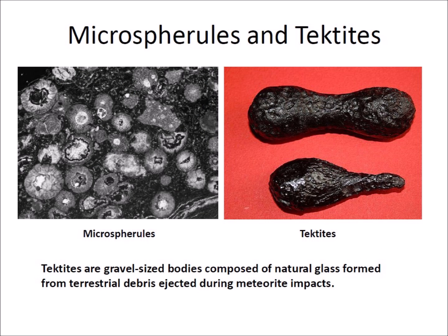Microspherules are droplets of melted target rock that are generally produced during the early stages of cratering and are immediately ejected at high velocities from the developing crater. Tektites are gravel-sized bodies composed of natural glass formed from terrestrial debris ejected during meteorite impacts. Microspherules and tektites can be deposited at great distances from the impact site. However, spherules cannot be used as independent evidence for meteorite impact events because they are also produced by volcanic eruptions and human industrial processes such as welding spatter and fly ash from coal-fired power plants.